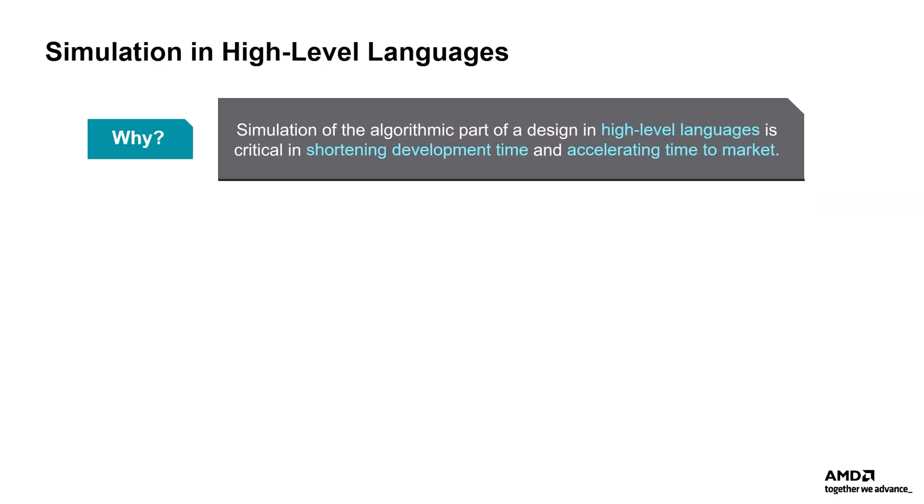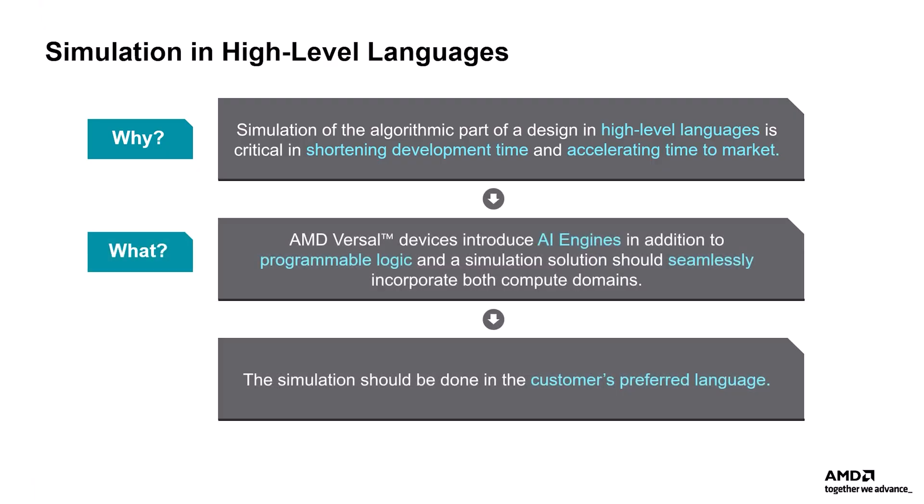Why do we need simulation? Simulation of the algorithmic part of a design in high-level languages is critical in shortening development time and accelerating time to market. Versal devices have AI engines in addition to programmable logic, and a simulation solution should seamlessly incorporate both compute domains. The simulation should be done in the customer's preferred language.